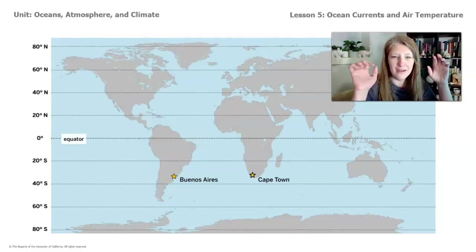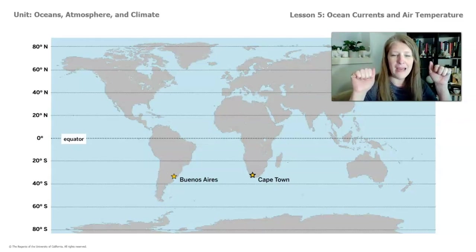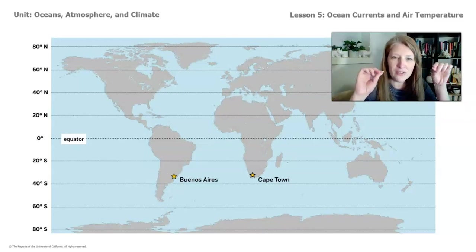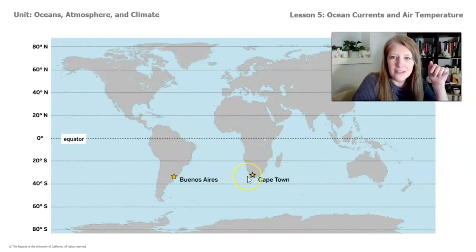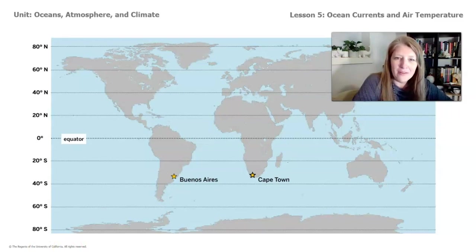This is a map of the continents and oceans of planet Earth. You can see two yellow stars on the map — one is for Cape Town, found on the continent of Africa, and Buenos Aires, on the continent of South America. If you look closely, they appear to be at very similar latitudes, which means we would expect them to be getting the same amount of energy from the sun.